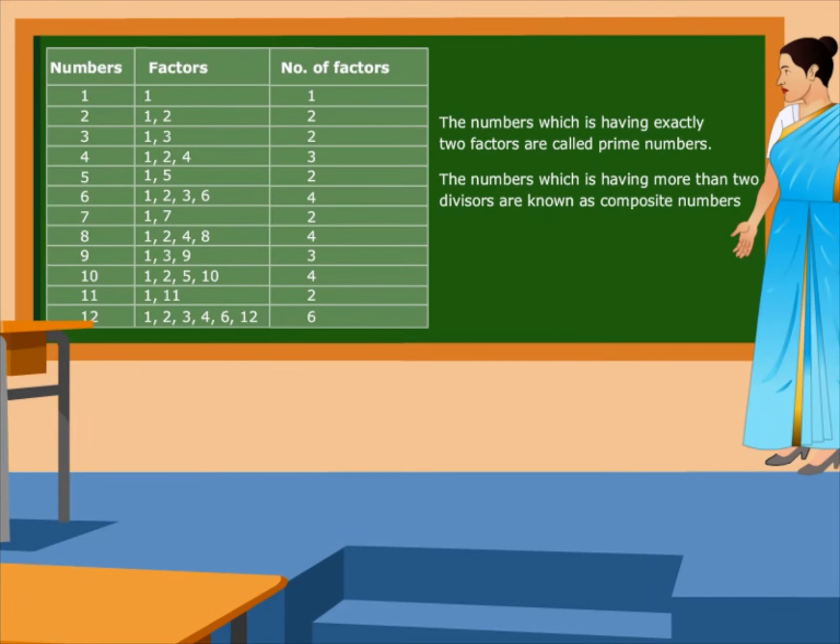The numbers four, six, eight, nine, ten, and twelve have more than two factors. Such numbers are called composite numbers.